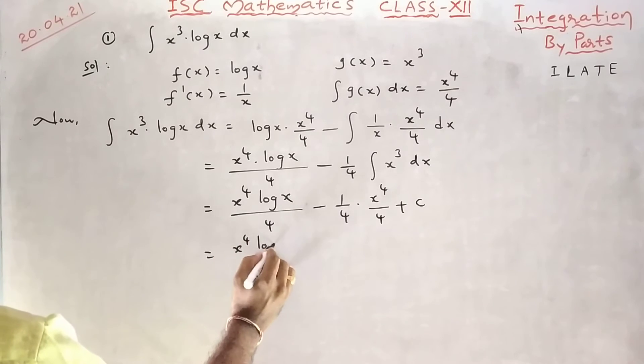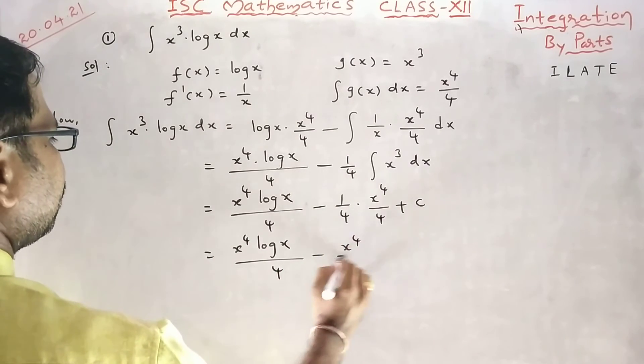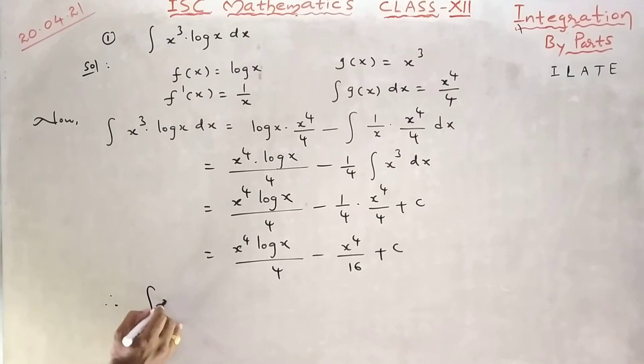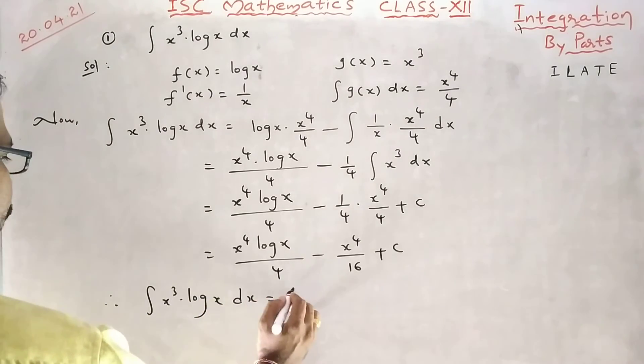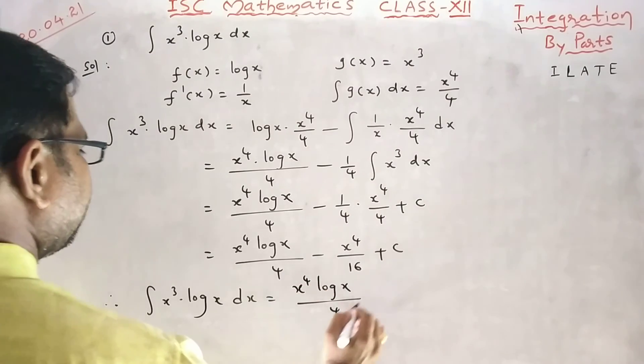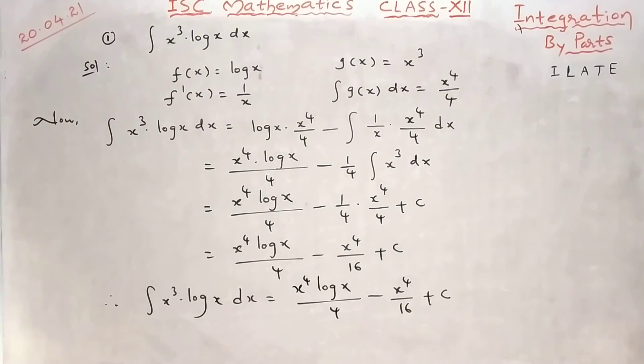Therefore, integral x cube log x dx equal to x power 4 log x by 4 minus x power 4 by 16 plus c.